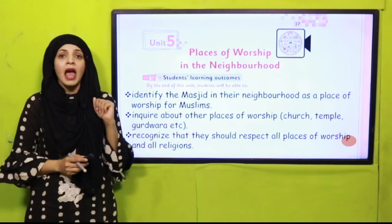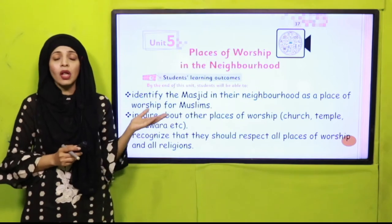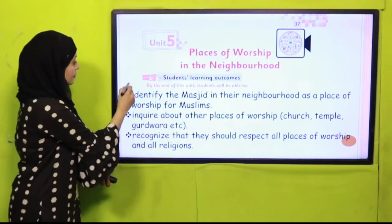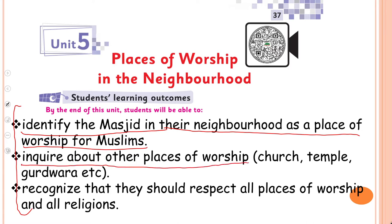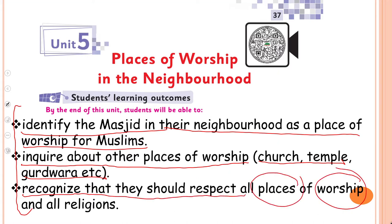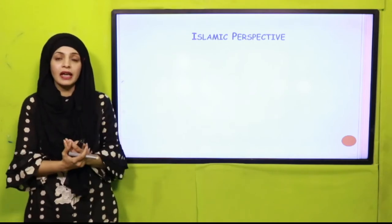Let's quickly revise our student learning outcomes given on page number 37. These are for the parents and teachers to understand that all students are now able to identify the masjid in their neighborhood as a place of worship for Muslims. They are able to inquire about other places of worship — church, temple, gurdwara — and they are also able to recognize that they should respect all places of worship and all religions. Let's quickly look at the Islamic perspectives discussed alongside the student learning outcomes.